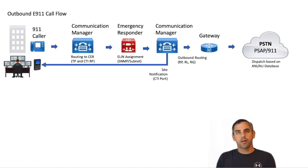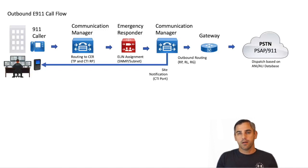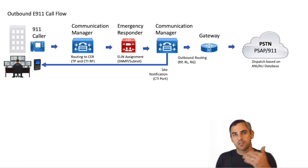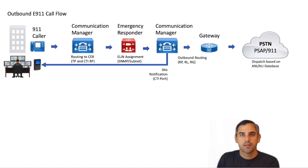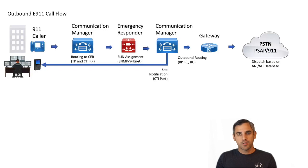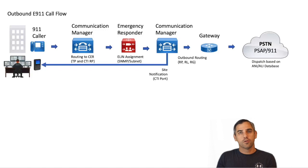When an endpoint dials 911, that endpoint has a calling search space. The calling search space has the ability to look inside the directory numbers and patterns across all the partitions that are part of that calling search space. In this case, we'll have a translation pattern — which can be used for many use cases but here is used to emulate an endpoint. The translation pattern has a calling search space of E911 to effectively route calls over to a CTI route point that is registered to Emergency Responder.